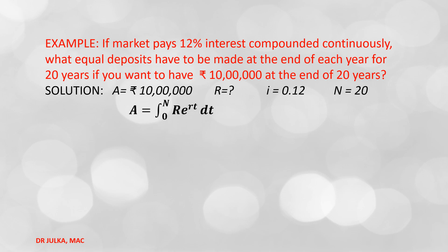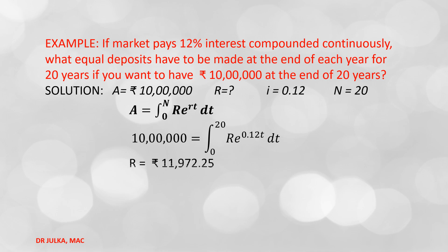If interest is compounded continuously, then the future value = integration of R · e^(rt) dt, with limit 0 to n. Putting A = 10,00,000, r = 0.12, and n = 20, after calculation we get R = Rs. 11,972.25. This is the required amount to be deposited at the end of each year for 20 years to accumulate Rs. 10,00,000.